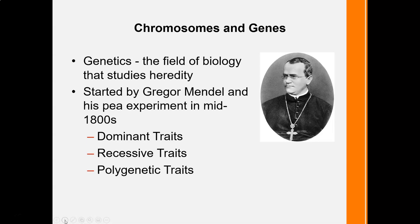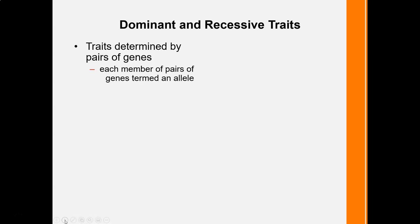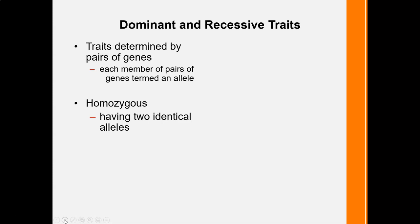We also have genes that are polygenic — it's not just one or two genes, but a combination of genes exhibiting those traits. We know traits are determined by a pair of genes, and each one of the pair is called alleles. It's a pair of alleles that give certain traits.